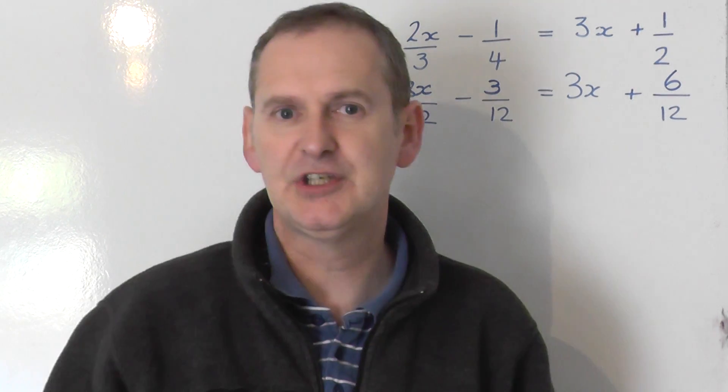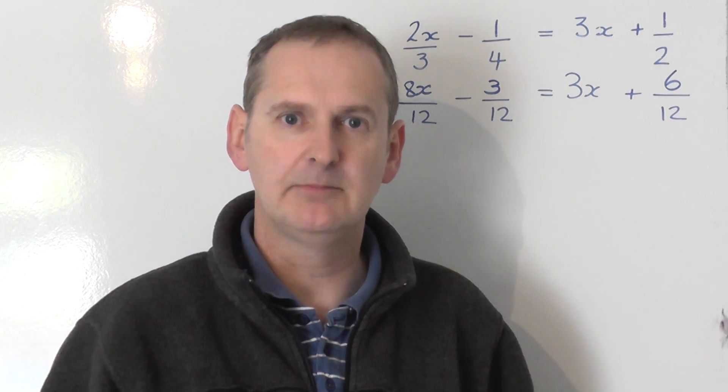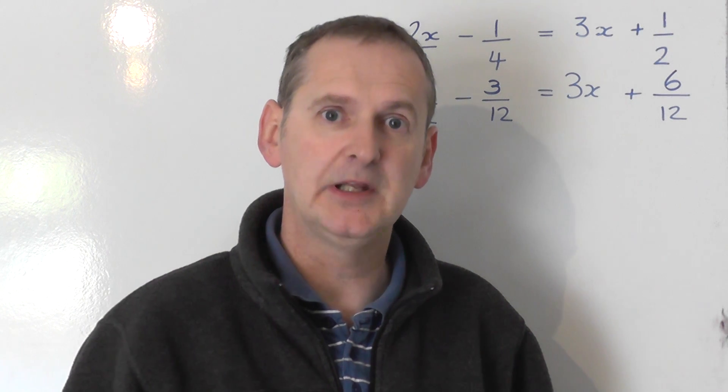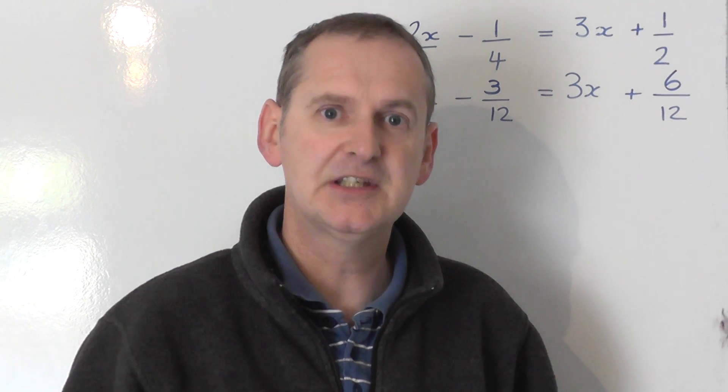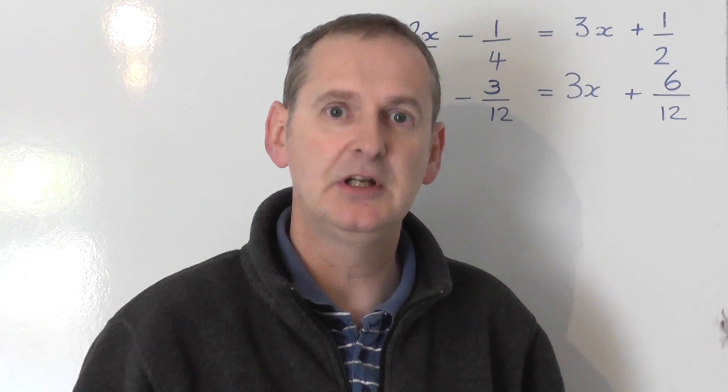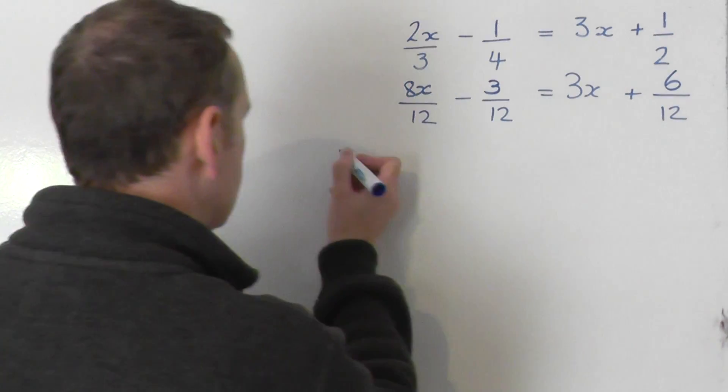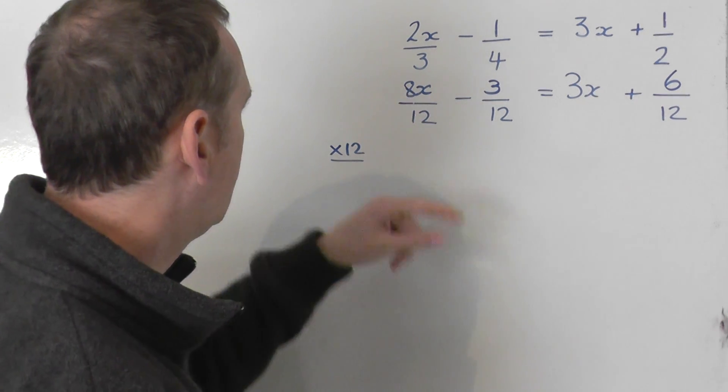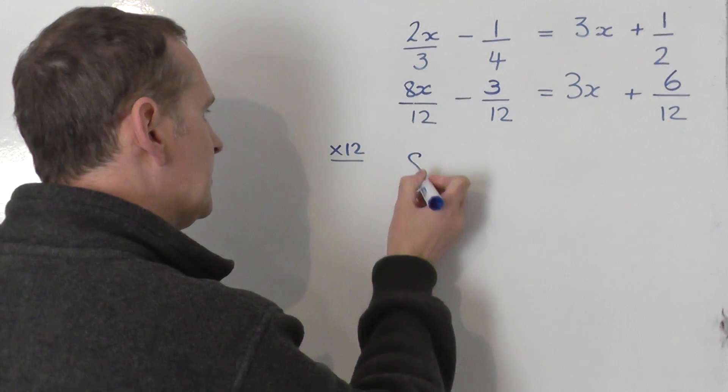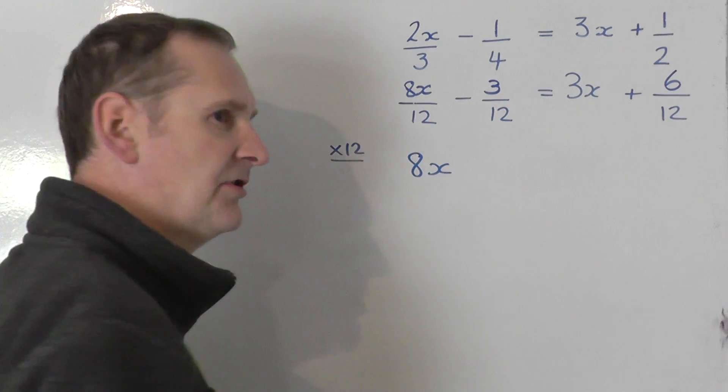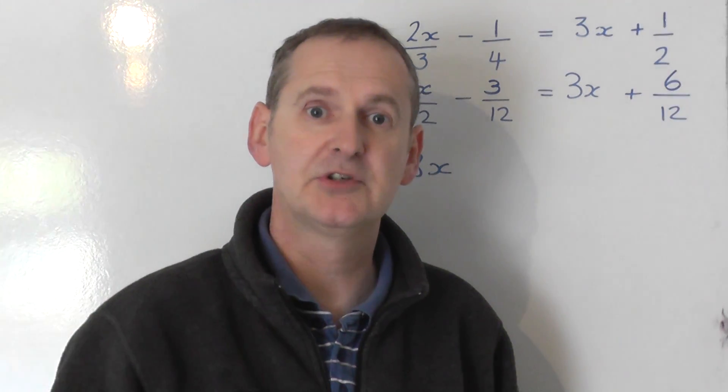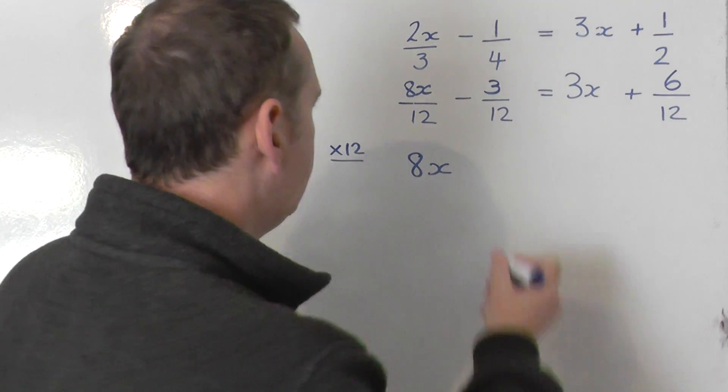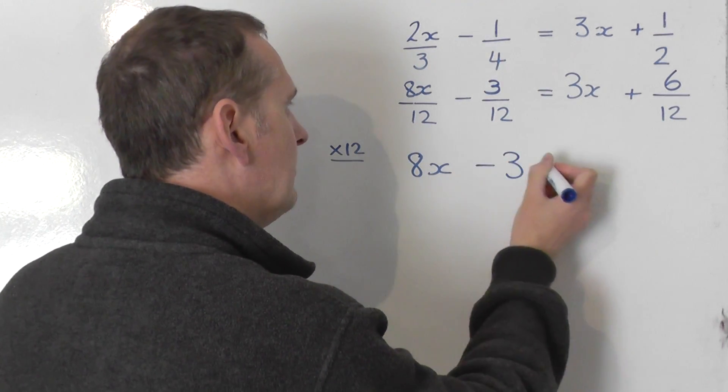It's still got three fractions in, but now every single bottom line is the number 12. We can now get rid of those 12s by simply multiplying every single term in that equation by 12. So I'm going to times every single term by 12. If I times this by 12, the share by 12 disappears. You just get 8x. You can just cross the 12 on the bottom out. It just disappears. I'm going to times this by 12, so the share by 12 on the bottom just disappears. And you get minus 3.